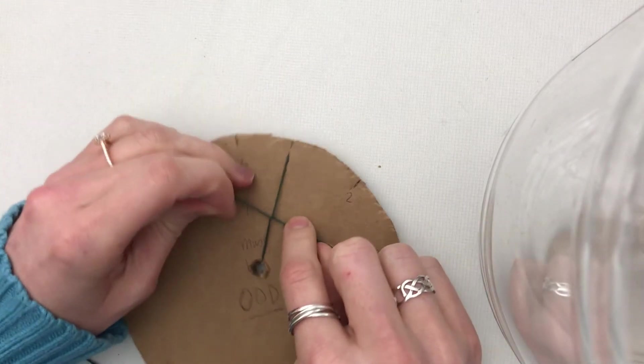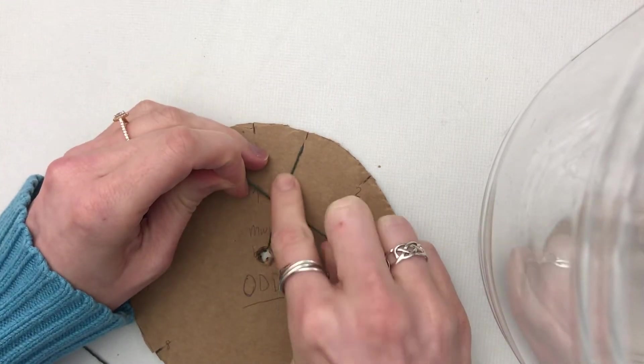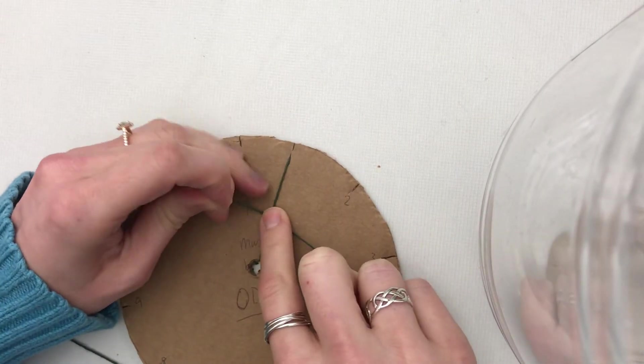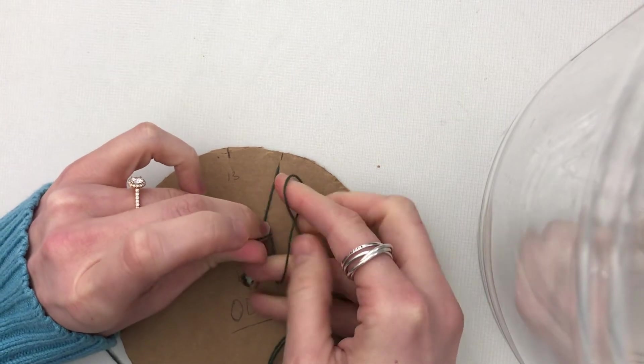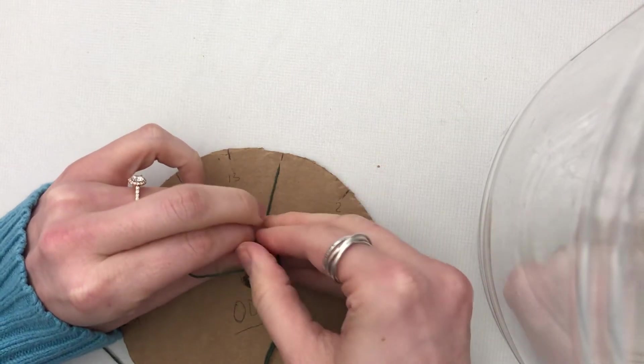Try to really make it tight without ripping your cardboard. So maybe get a friend or someone around the house to help you tie those together.